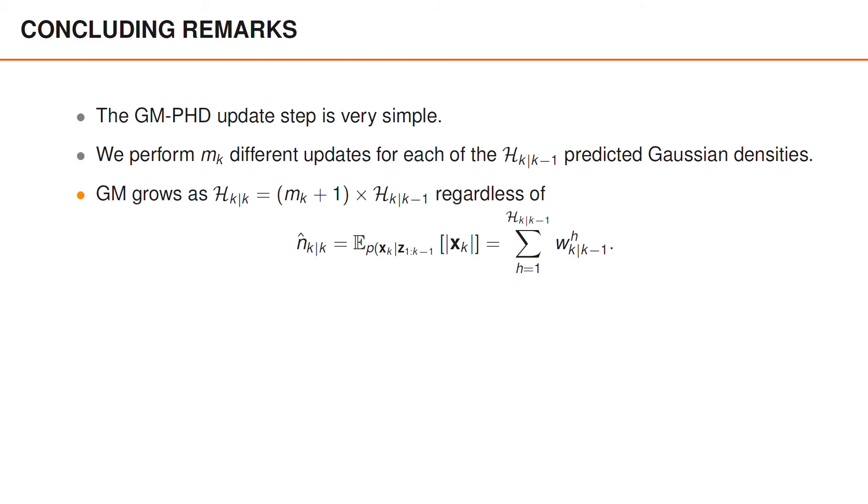The number of terms in the posterior phd grows as mk plus one times the number of terms in the predicted phd. Note that this is true regardless of how many objects we think are present, which makes it a remarkably efficient multi-object tracking algorithm.